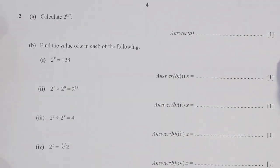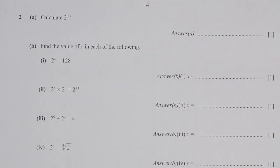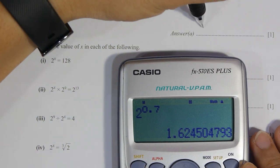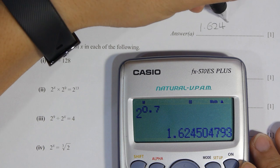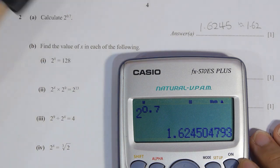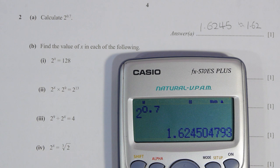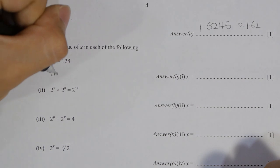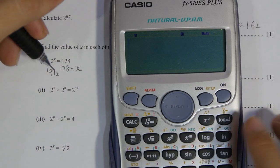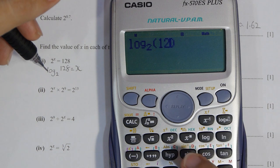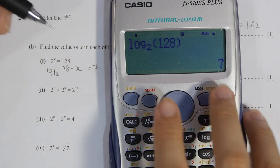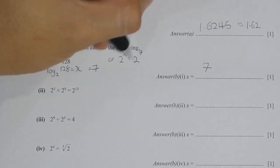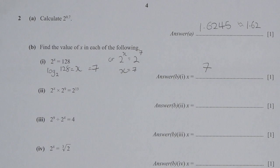Question 2A is pretty straightforward — simply key it into the calculator and you get the result of 1.62. For part B number one, there are actually two methods to solve this. The first is using logarithm: log base 2 of 128, and the result will be equivalent to 7, and 7 is the x here.